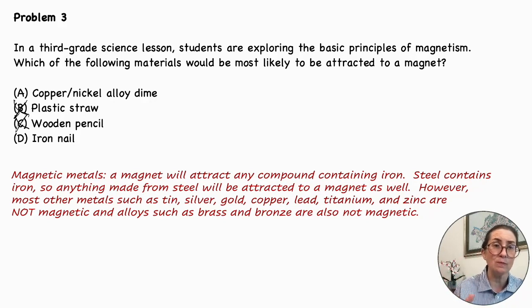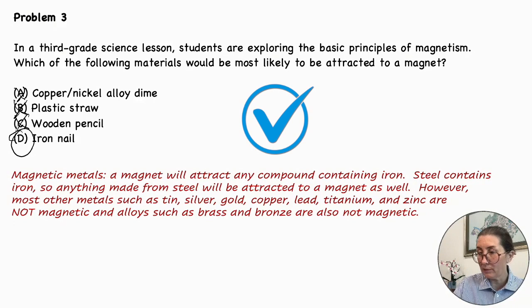Let's look at magnetic metals and alloys. A magnet will attract any compound containing iron. Steel contains iron, so anything made from steel will be attracted to a magnet as well. However, most other metals such as tin, silver, gold, copper, lead, titanium, and zinc are not magnetic. And alloys such as brass and bronze are also not magnetic. So a copper nickel alloy dime will not be magnetic, but an iron nail will be. Anything containing iron.